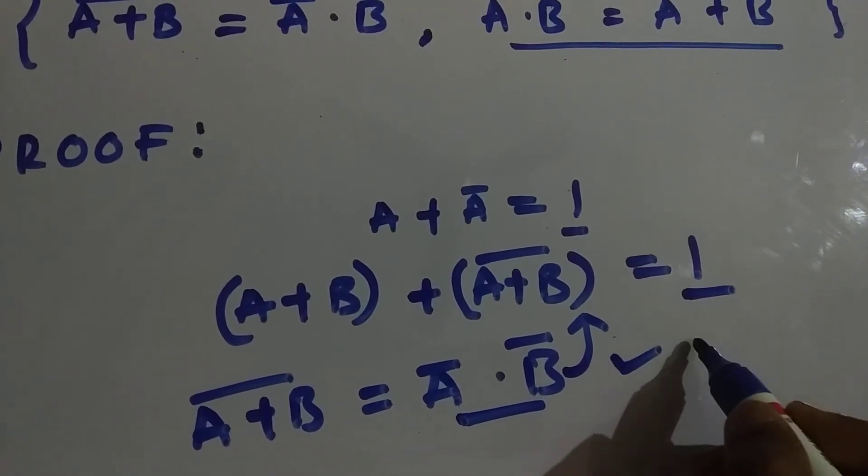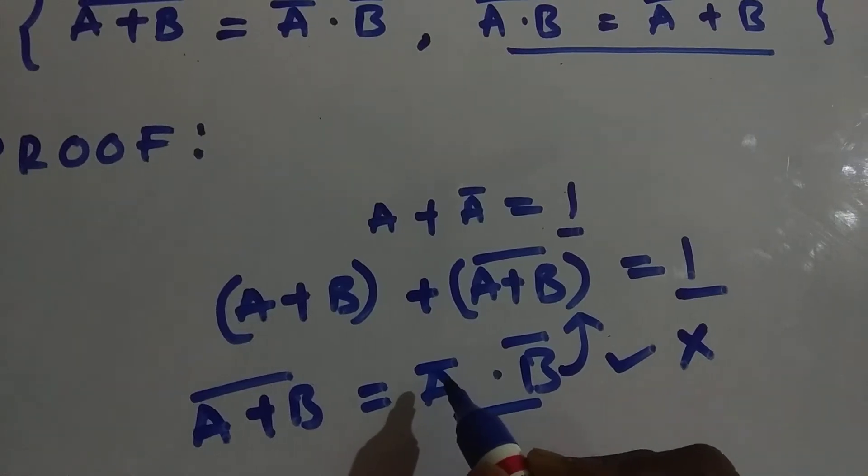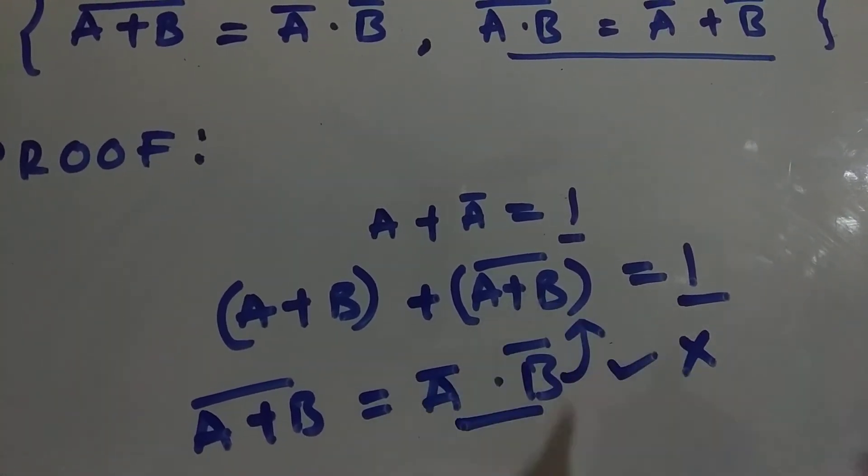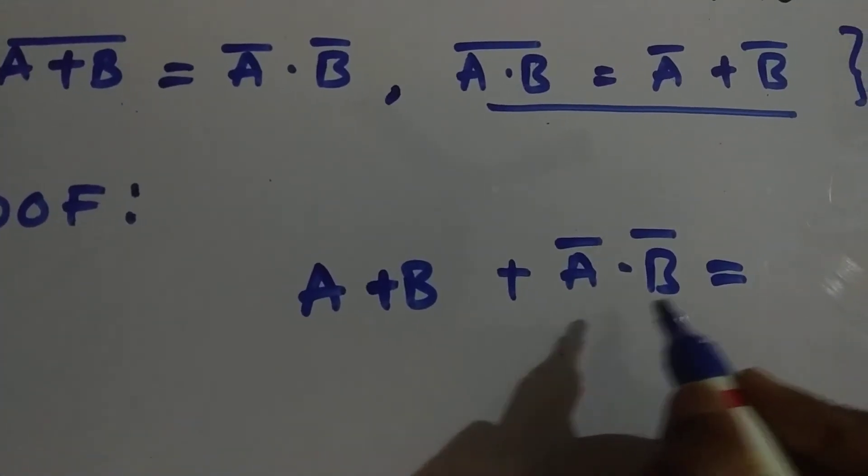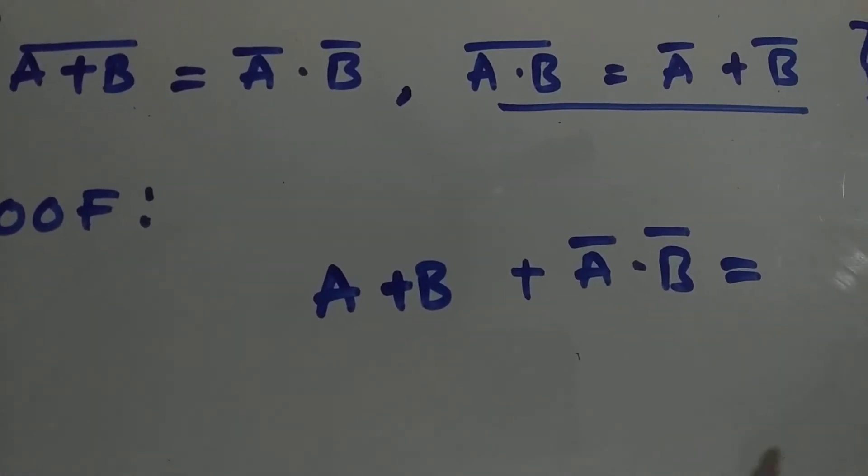If the result is not equal to 1, then this statement is wrong. So let's substitute A bar dot B bar in A plus B whole bar's place. We have substituted it. If we get the result as 1, that means De Morgan's law theorem is proved.